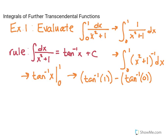Now we just evaluate. Tangent equals 1 at pi over 4, so the inverse tangent of 1 is pi over 4. And tangent is 0 when x is 0, so inverse tangent of 0 is 0. We have pi over 4 minus 0, which equals pi over 4. That completes this problem.